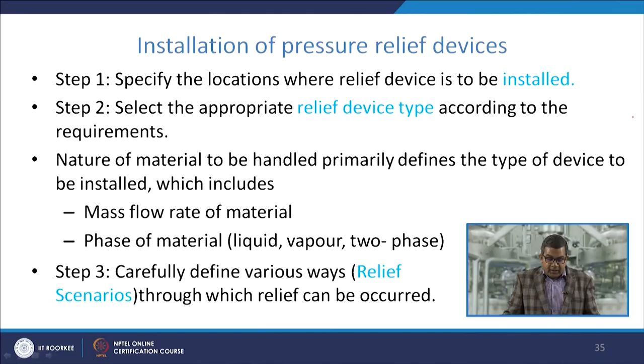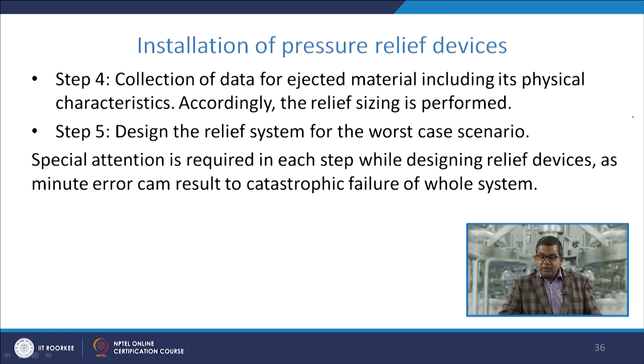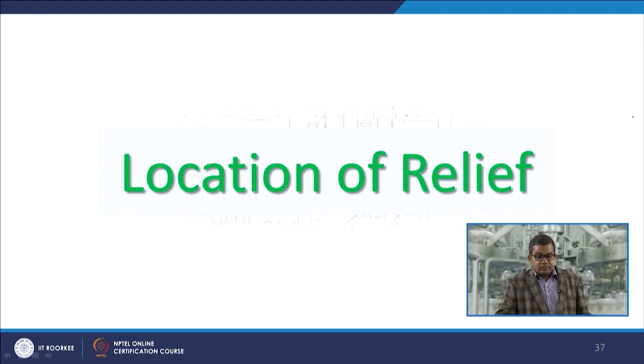Step three — carefully define the various phases, that is, the relief scenario through which relief can occur, achieved by plotting temperature versus pressure or pressure versus time plots. Step five — collect data for the ejected material including physical characteristics, and perform relief sizing accordingly. The last step — design the relief system for the worst-case scenario, being aware of all consequences. Special attention is required at each step since a minute error can result in catastrophic failure of the entire system.